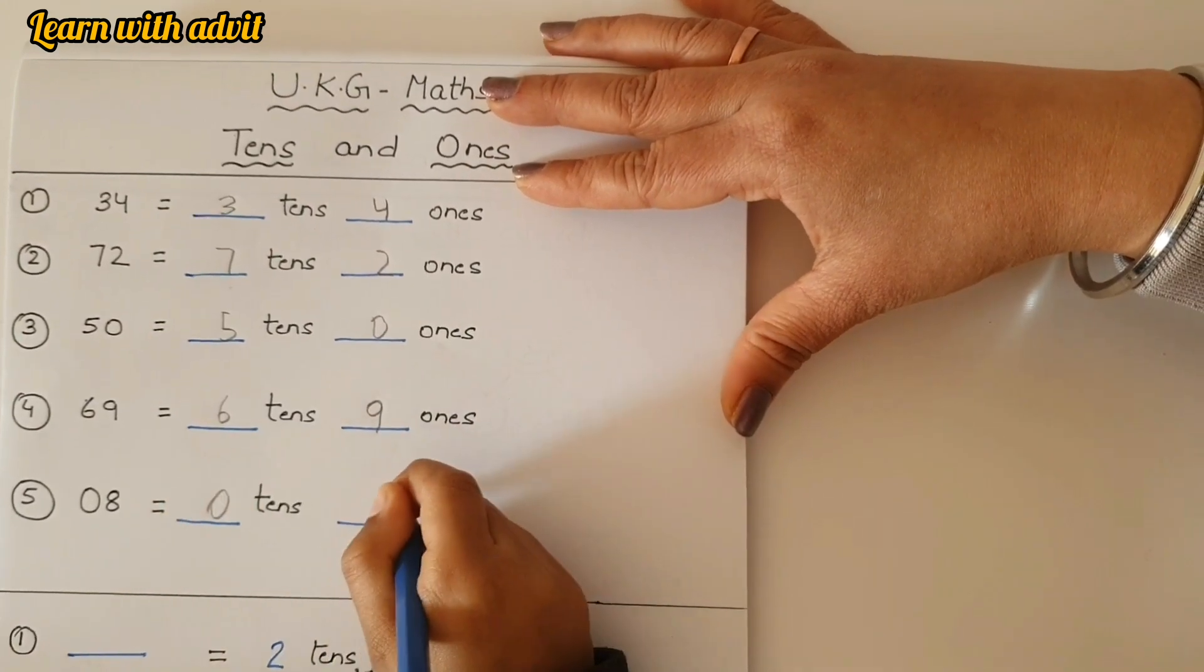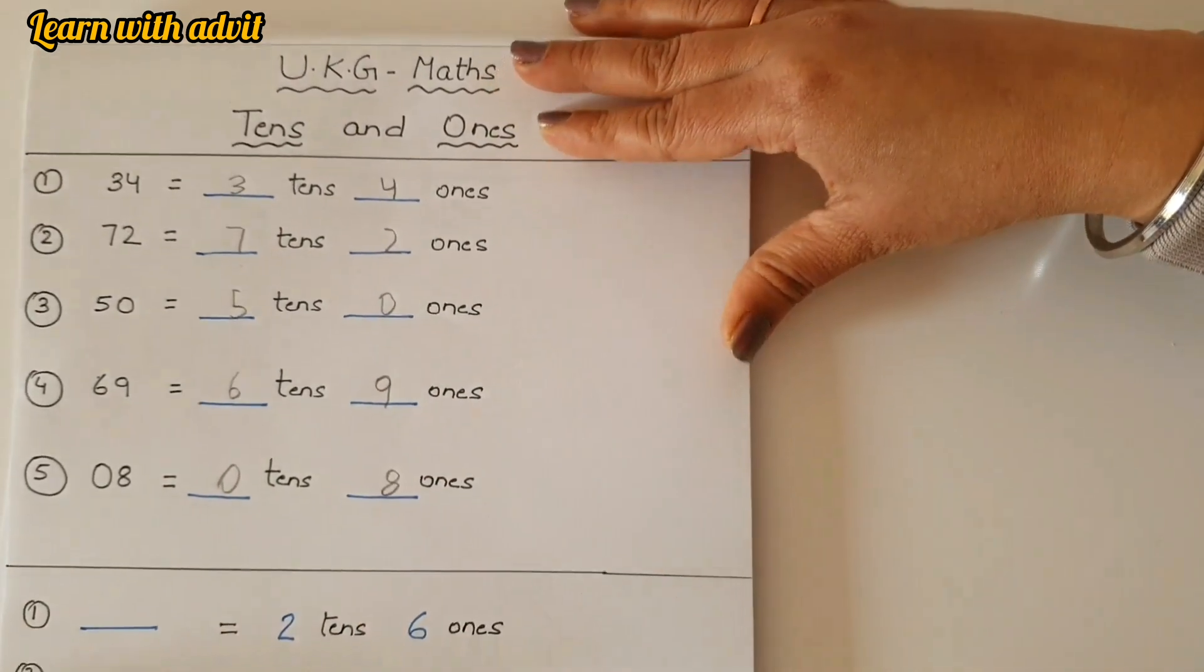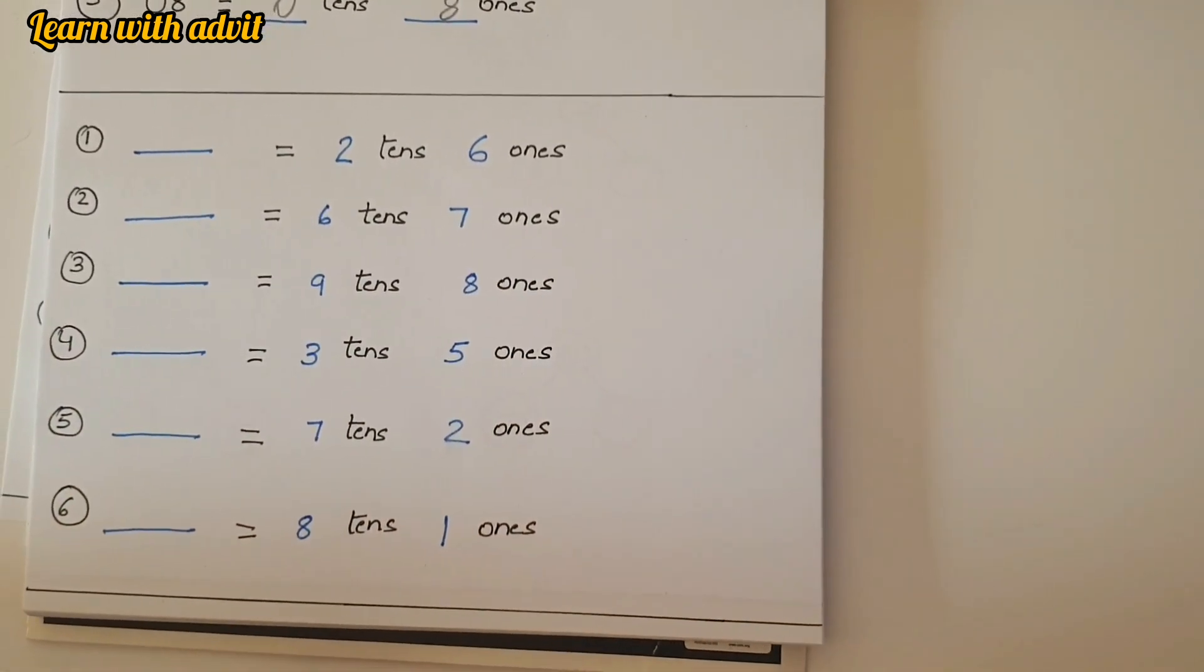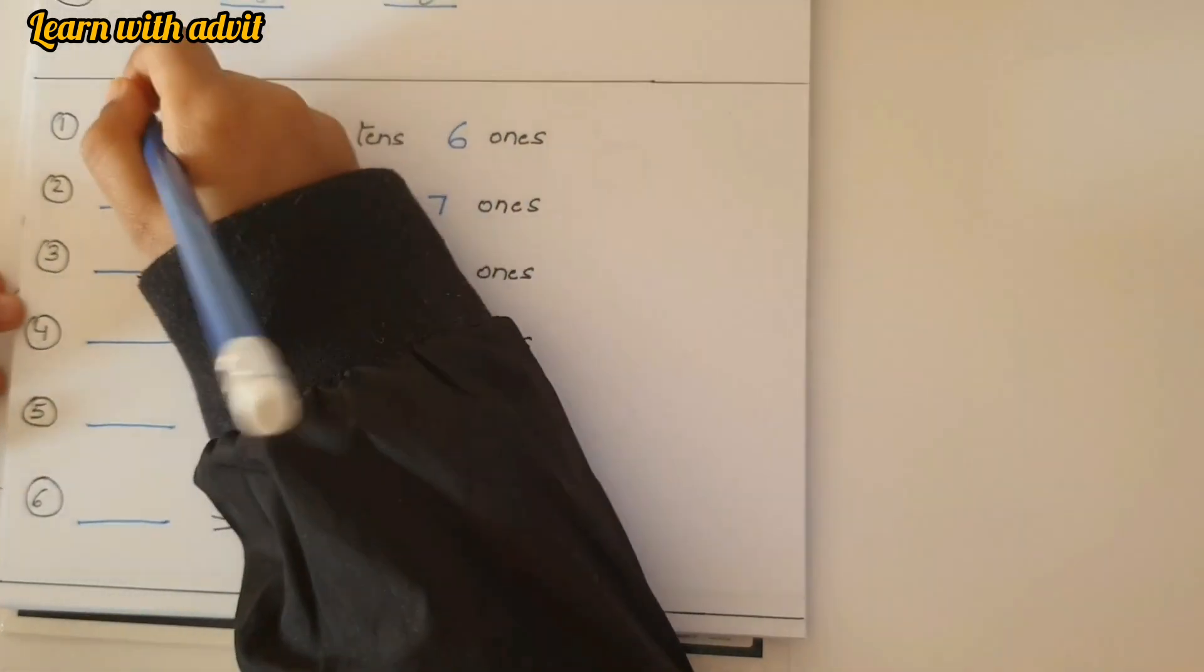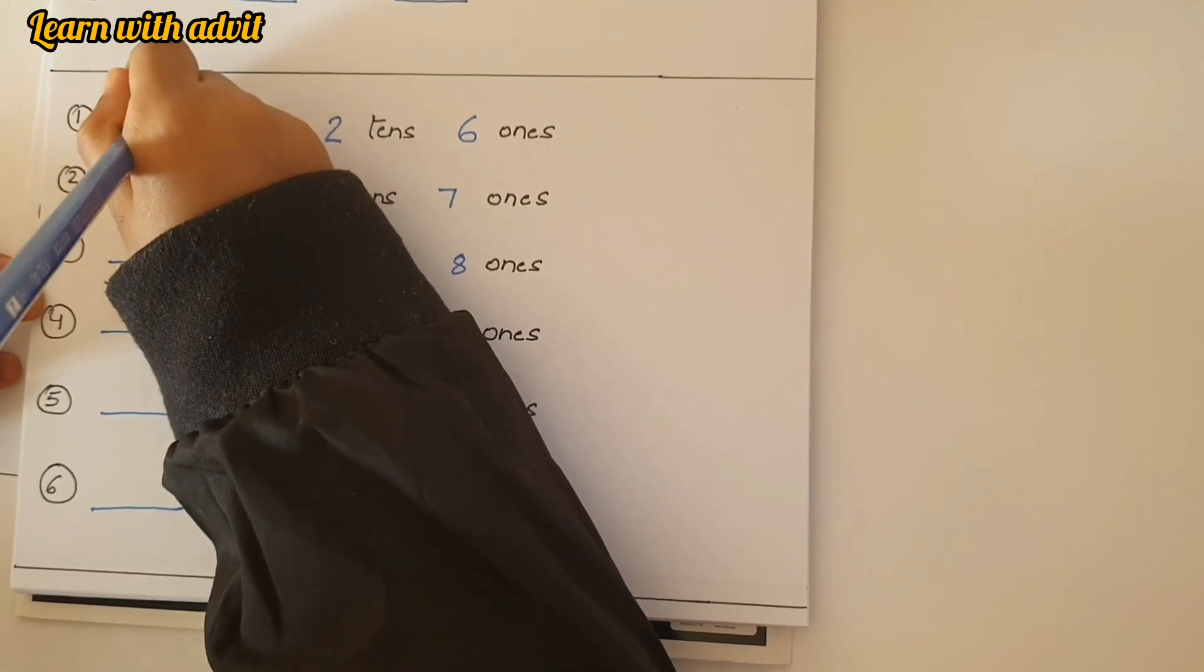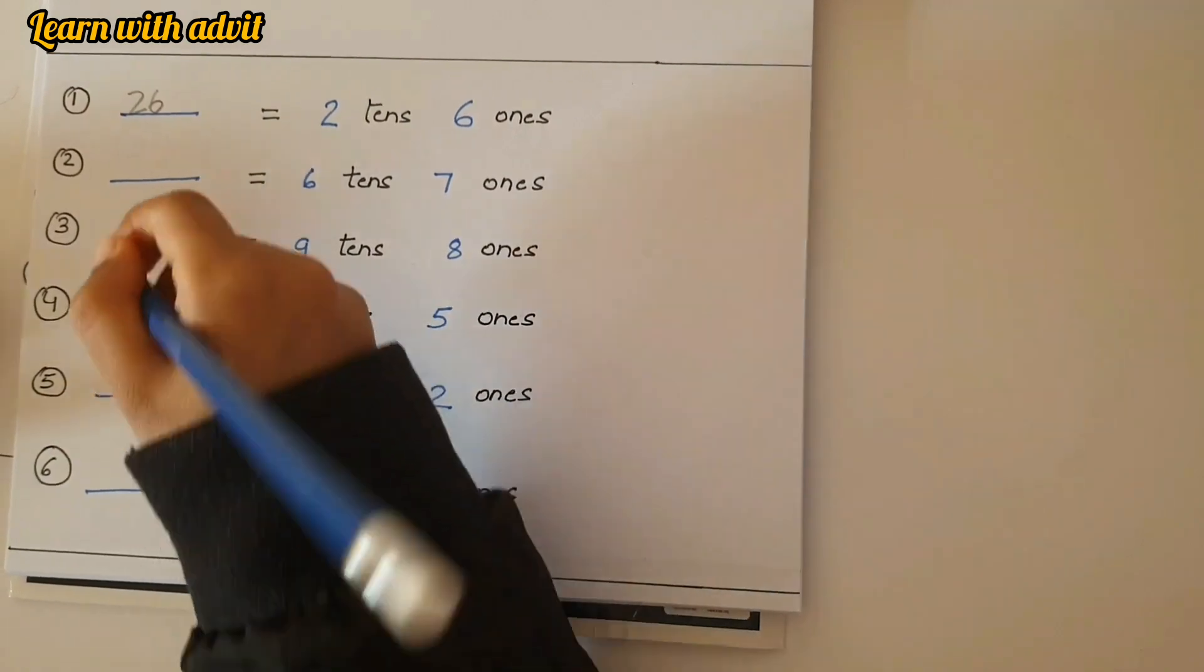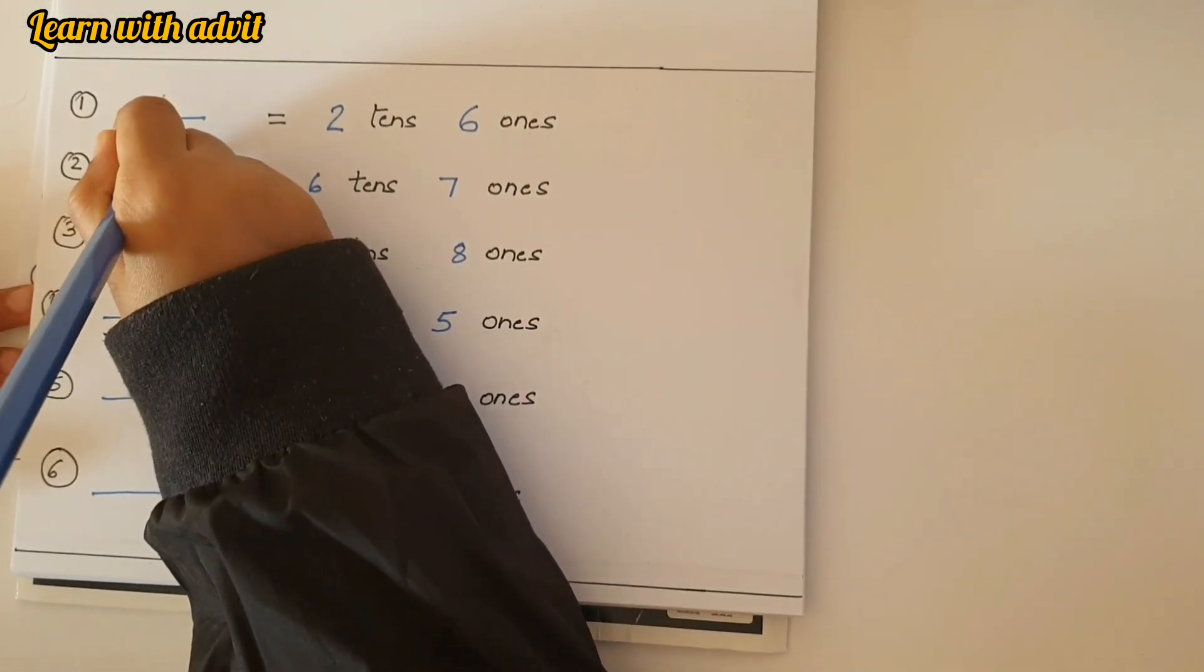Okay, now you have to write numbers. Two tens and six ones, number is 26. Good. And the next is six tens and seven ones, sixty seven.